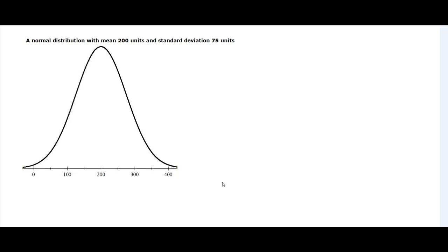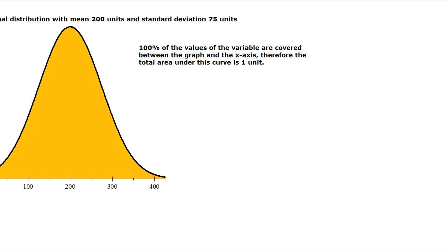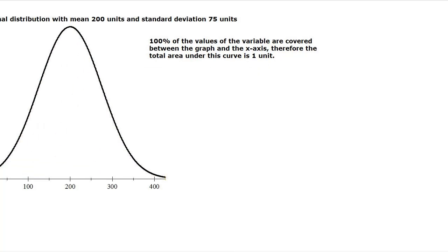So this is a graph of a normal distribution with mean 200 units and a standard deviation 75 units. Now this means that 100% of the values of the variable are covered between the graph and the x-axis. Therefore, the total area under this curve is 1 unit, if we treat that as proportion.